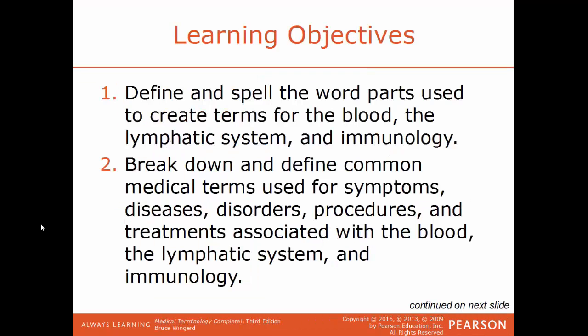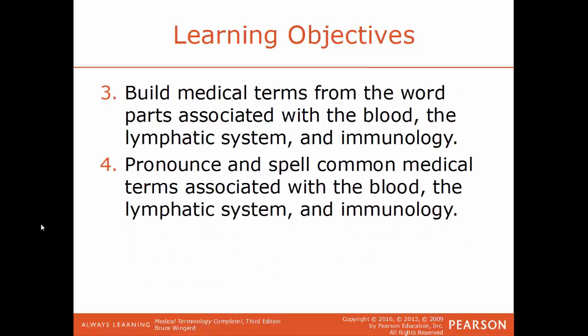The learning objectives for this chapter: define and spell the word parts used to create terms for the blood, the lymphatic system, and immunology. Break down and define common medical terms for symptoms, diseases, disorders, procedures, and treatments. Build medical terms from the word parts, and pronounce and spell common medical terms associated with the blood, the lymphatic system, and the immune system.